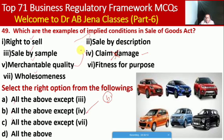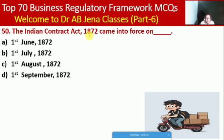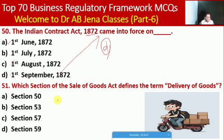Next MCQ: the Indian Contract Act — friends, we know it is 1872 — but the question may ask when it came into force. Whether 1st June 1872, 1st July 1872, 1st August 1872, or 1st September 1872. Here D is the right option — 1st September 1872. Next MCQ: which section of the Sale of Goods Act defines the term 'delivery of goods'? Whether Section 50, 53, 57, or 59. Here C is the right option — Section 57.